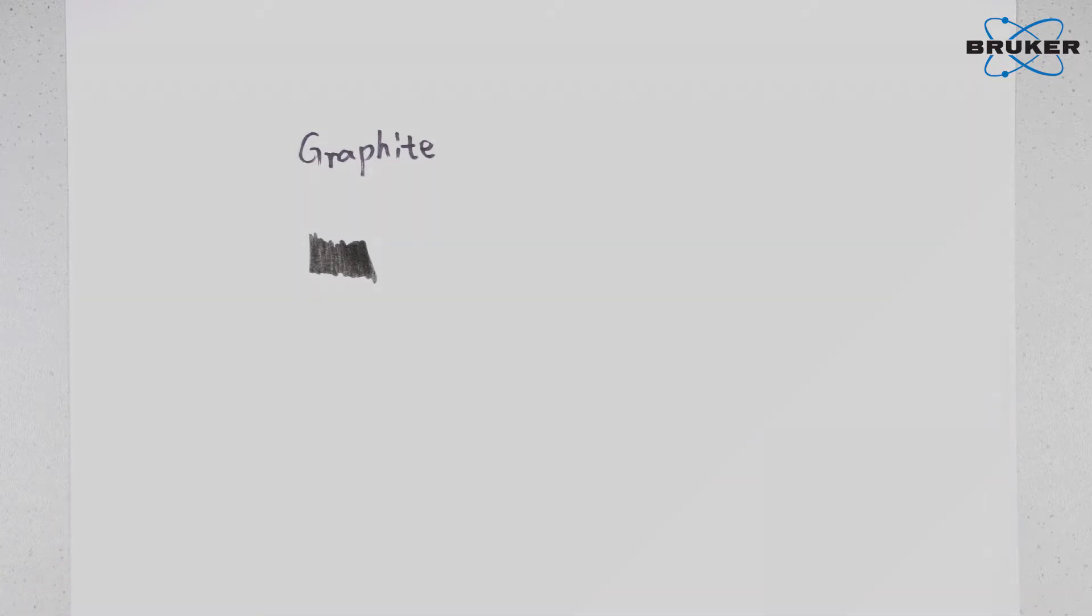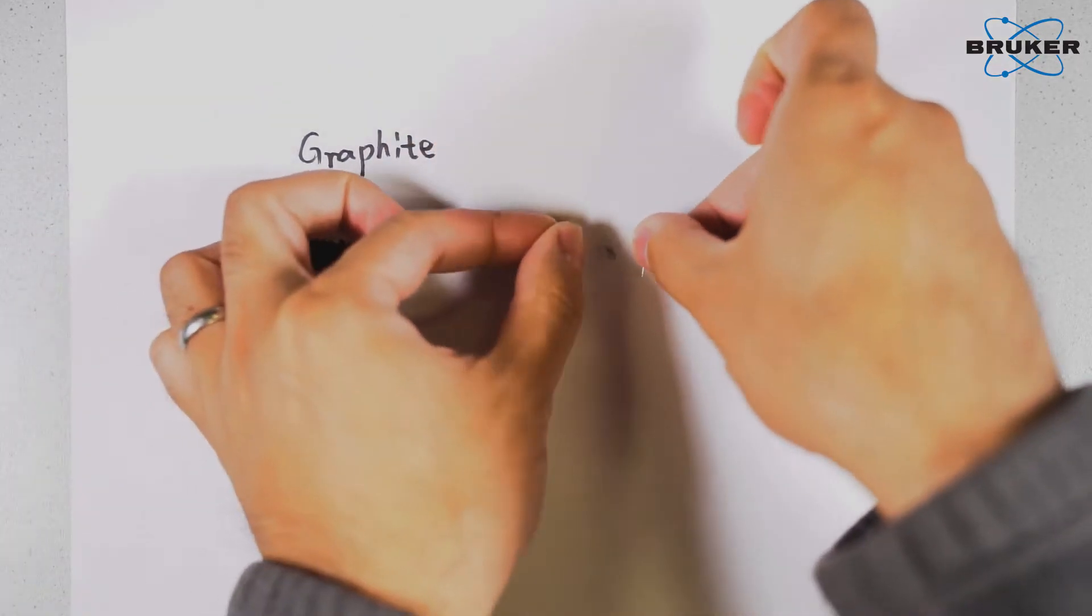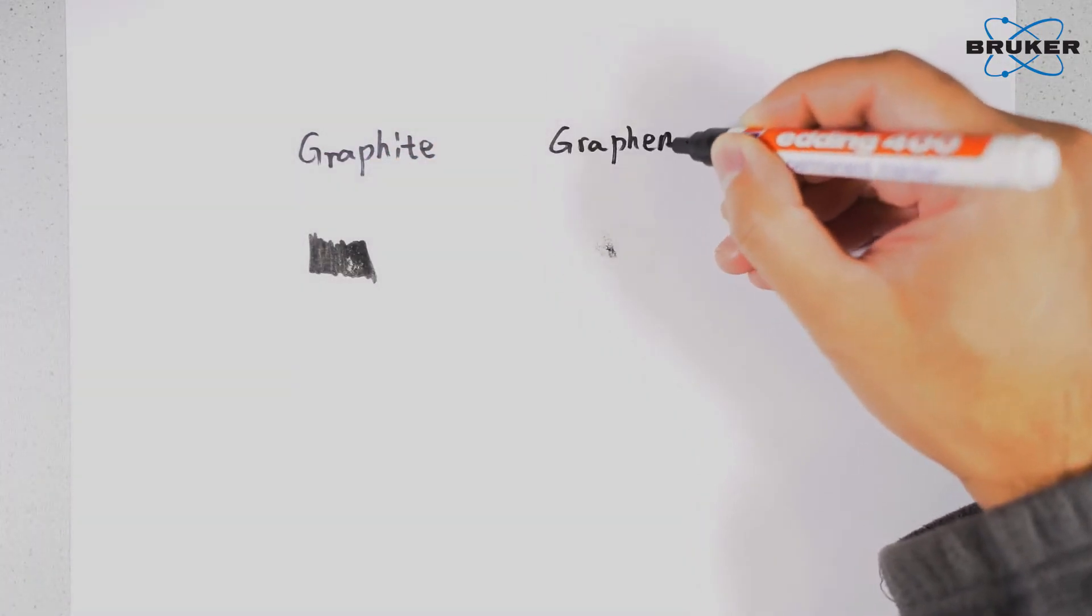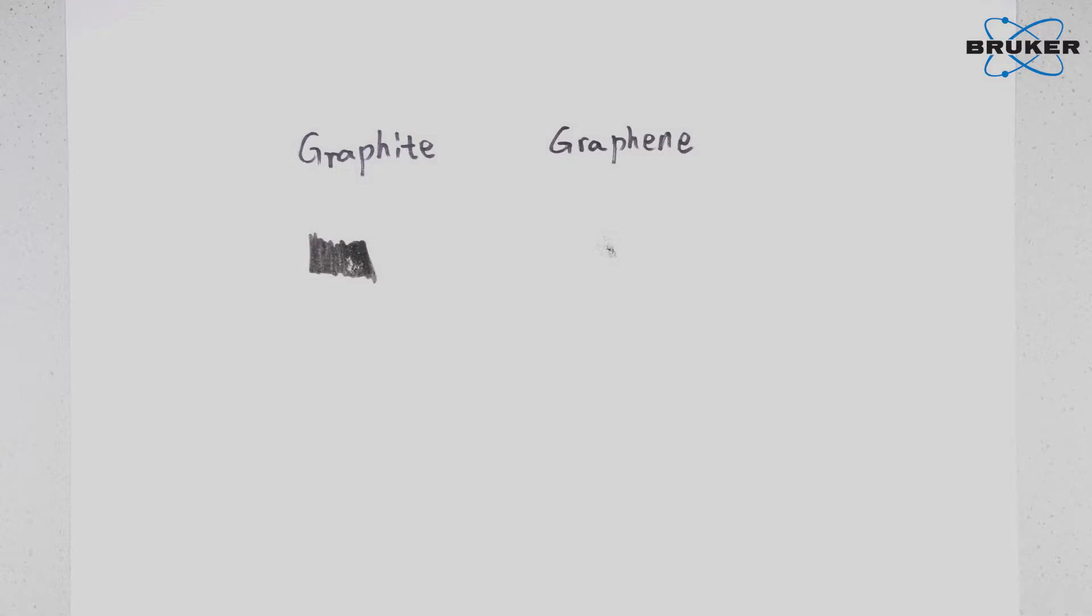However, the history of graphene is not very long. Scientists in the University of Manchester found a very simple method of preparing graphene by using scotch tape. For their discovery, they were awarded the Nobel Prize in 2010.